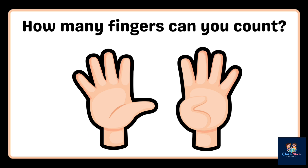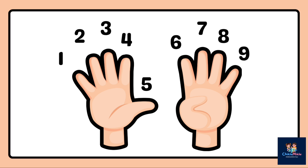How many fingers can you count? One. Two. Three. Four. Five. Six. Seven. Eight. Nine. Ten. How many fingers? Nine. Nine fingers.